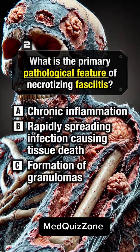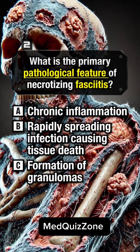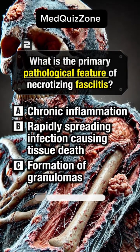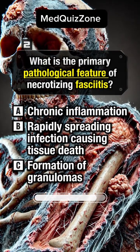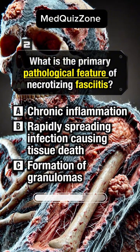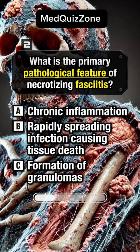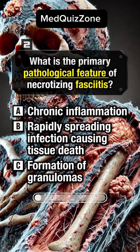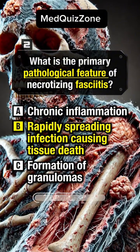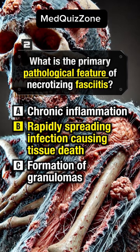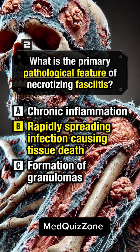What is the primary pathological feature of necrotizing fasciitis? Answer B, rapidly spreading infection causing tissue death.